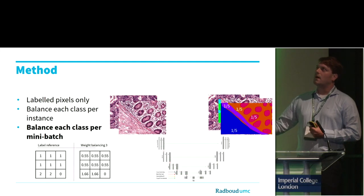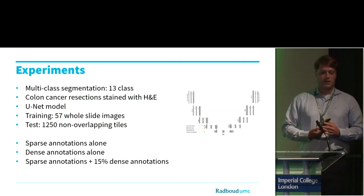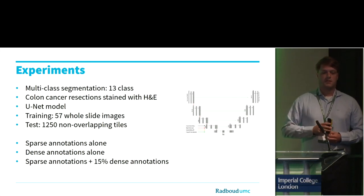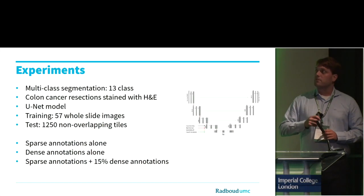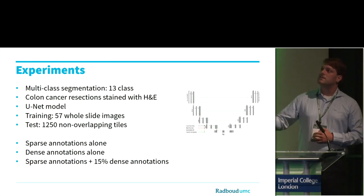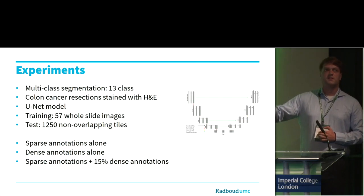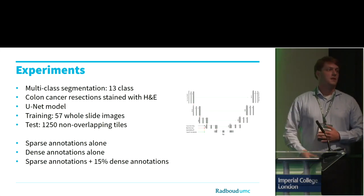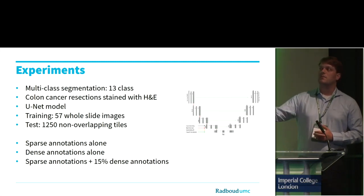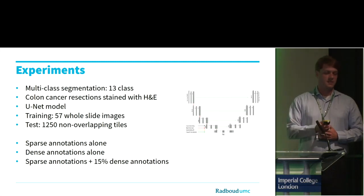We apply these two balancing methods to a thirteen-class segmentation task, trained on three different annotation datasets: sparse annotations only, dense annotations only, or a combination of both with a relatively small amount of dense annotations.